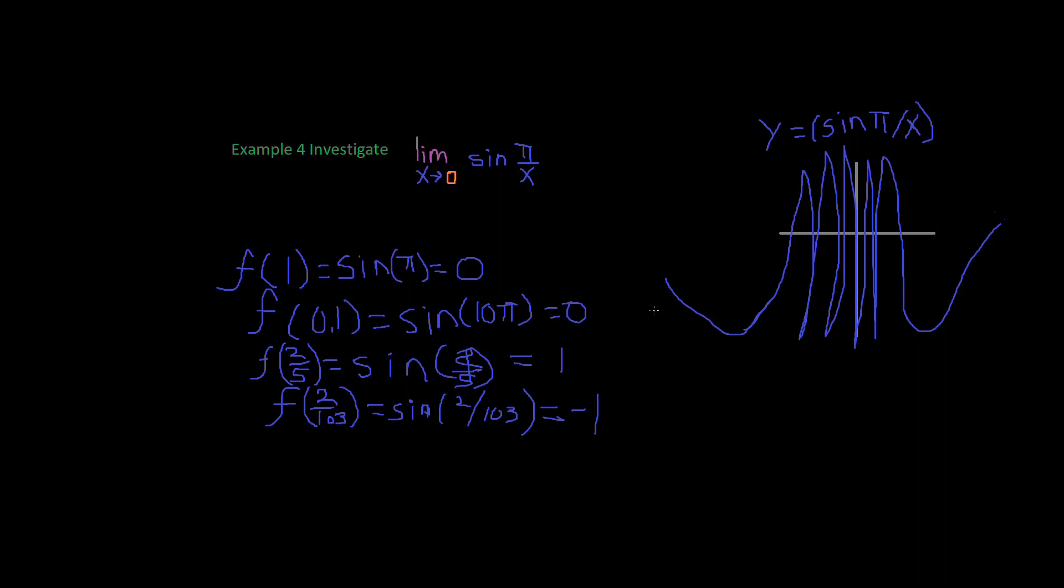Since the values of this given function do not approach a fixed number as x approaches 0, we have to say that the limit of this function f(x) = sin(π/x) as x approaches 0 does not exist, maybe because there's no fixed destination.